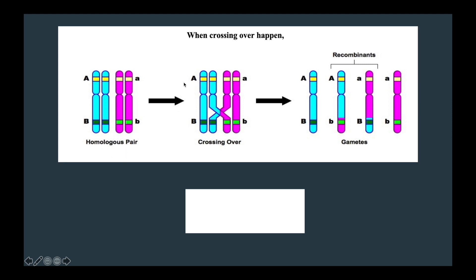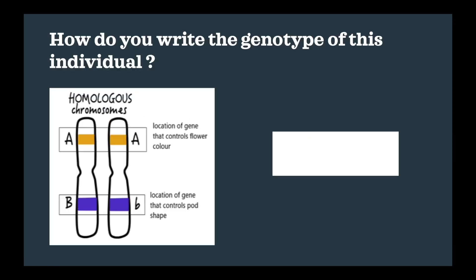Although we are looking at the inheritance of two characteristics at once, since the two genes are located on the same chromosome, the way we write the genotype is slightly different. We write one chromosome slash one chromosome — in this case, one chromosome containing capital A, capital B, slash another chromosome containing small a, small b. For another individual, it would be written as capital A capital B slash capital A small b.